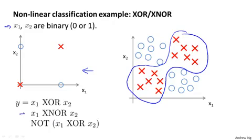Or actually, this is the x1 XNOR x2 function, where XNOR is the alternative notation for NOT (x1 XOR x2). So x1 XOR x2 is true only if exactly one of x1 or x2 is equal to one. It turns out that the specific example I'm going to use works out a little bit better if we use the XNOR example. It means NOT (x1 XOR x2).